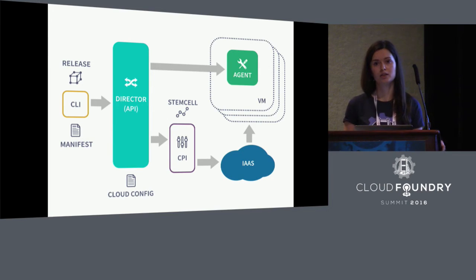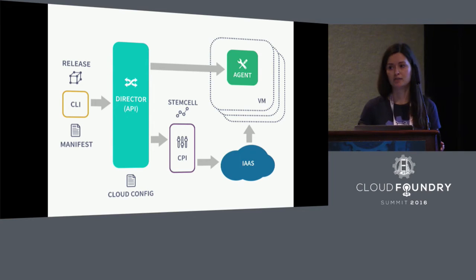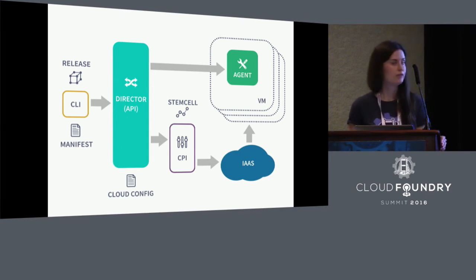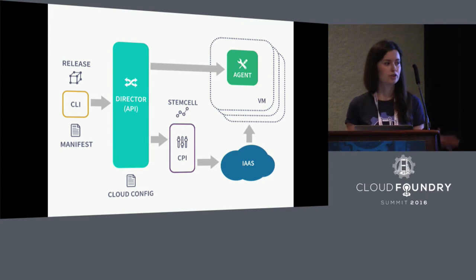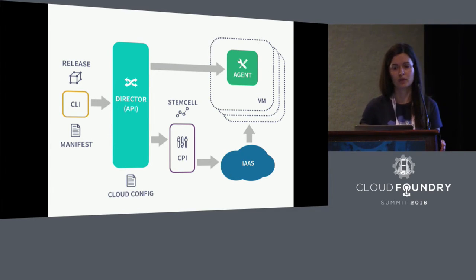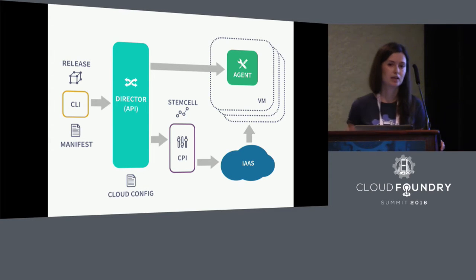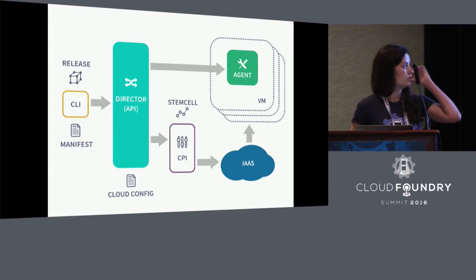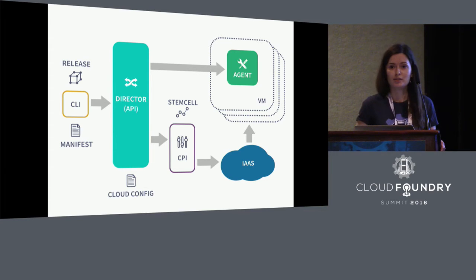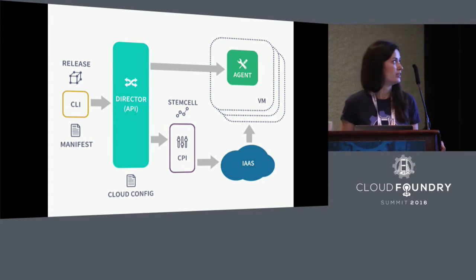The CPI abstracts away infrastructure details to a well-defined interface. It has methods like create VM, create disk, attach disk. This way, if you have Amazon, GCE, or any other infrastructure, you can make it work with BOSH by just implementing the CPI. We officially support CPIs for AWS, OpenStack, vSphere, and other infrastructures, but since it's all open source, you can add support for any infrastructure by implementing the CPI.